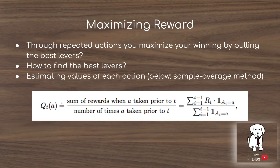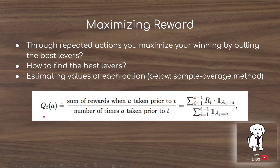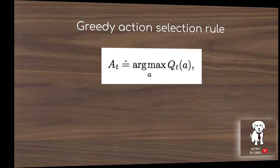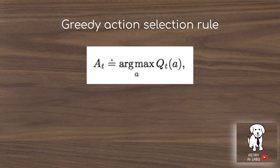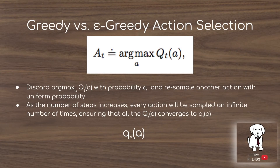The idea of the K-Armed Bandit is to maximize reward. The simplest approach is to estimate each button's reward as the sum of rewards received when pushing that button divided by the number of times it was pushed. The greedy action selection rule selects the button with the maximum estimated value — the action returning the most reward according to this estimate.